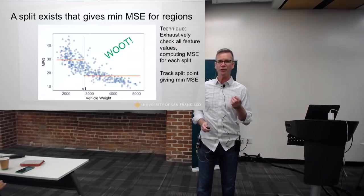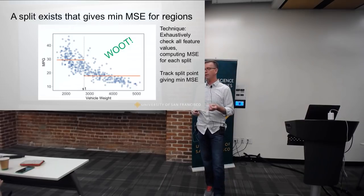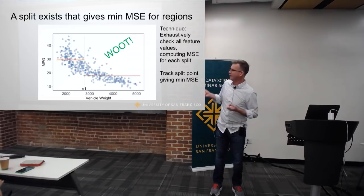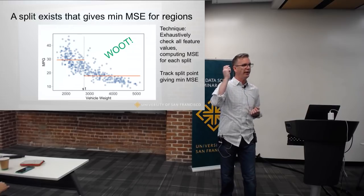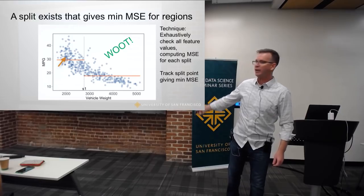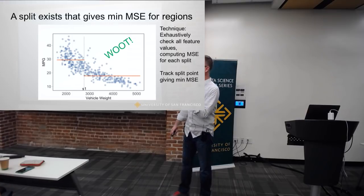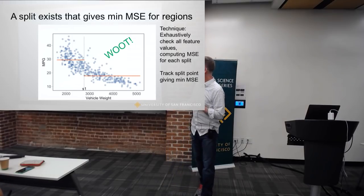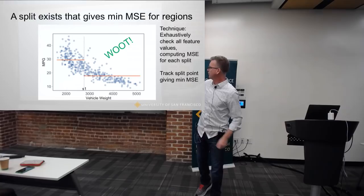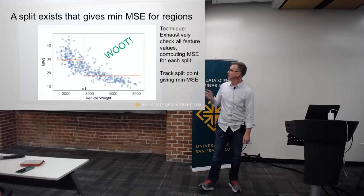It turns out that there exists a split point in this region that will give the minimum squared error. It may not be a good one, but there exists a minimum. So I'm just going to exhaustively try each x value — start on the left and go through them all. For each x value I compute the mean squared error, track all of those values, and then the x coordinate associated with the minimum error is my split point. My predictions would then be the average of whatever's on each side.